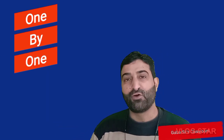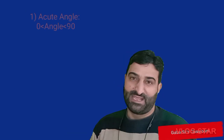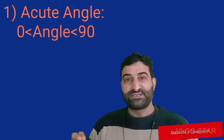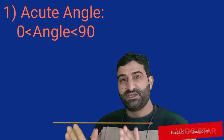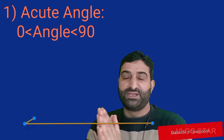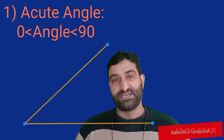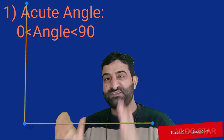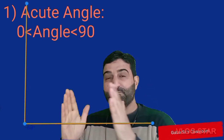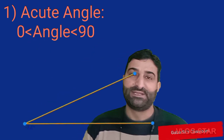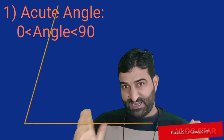First of all, let's start with the acute angle. An acute angle is that angle whose measure is more than zero degrees but less than 90 degrees. Or you can say an angle with a measure between zero and 90 degrees is called an acute angle.